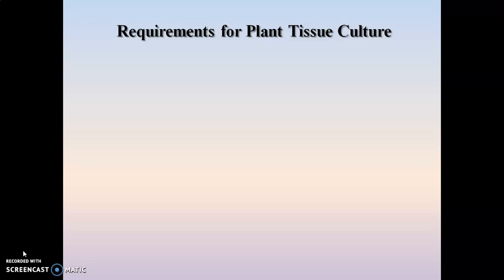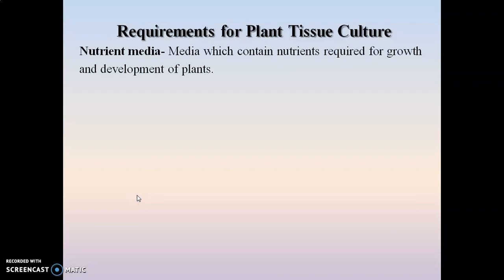Plants which are grown naturally utilize the nutrients from the soil for their growth and development. They also utilize carbon dioxide from the atmosphere as a source of carbon, converting it into carbohydrates by the process of photosynthesis. These carbohydrates are further utilized as a source of energy by the plant cells. When tissues or cells are grown on an artificial medium, they also need the same nutrients as naturally growing plants. The nutrient media is the media that contains the nutrients required for the growth and development of the plants.